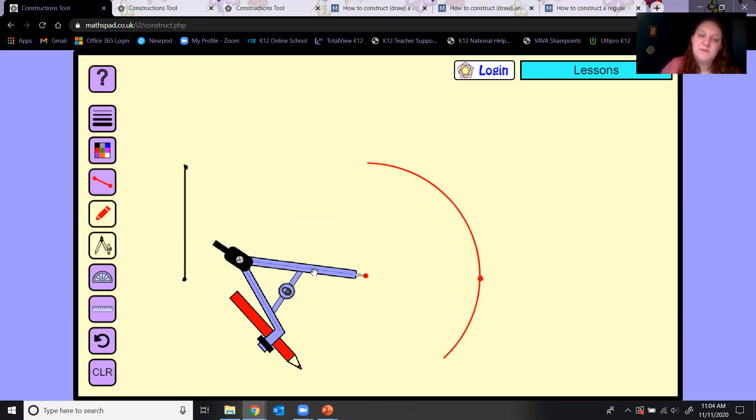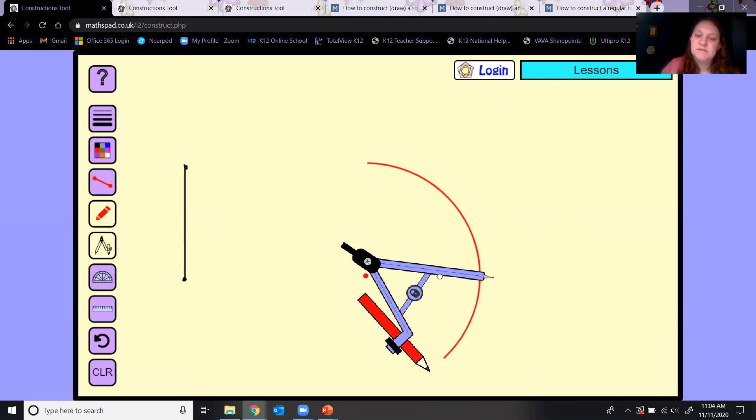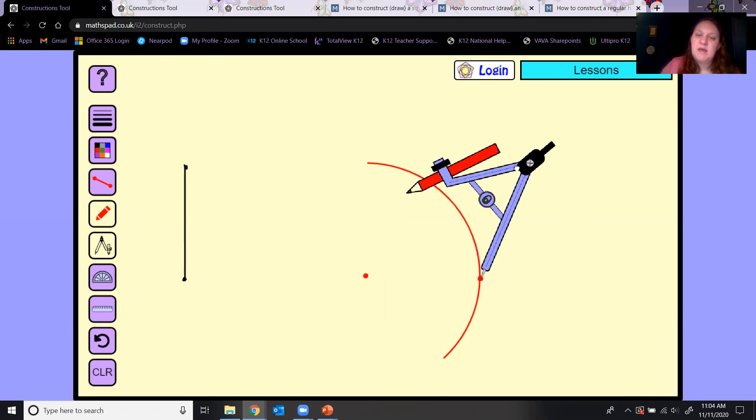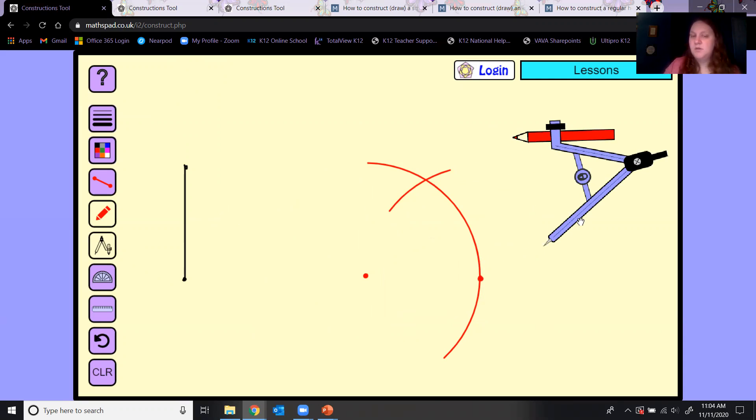Then take the point of your compass, put it on your new point, and make another intersection that intersects the first arc you made. Give that a point. Now with a straight edge, connect your three points and you will indeed have a triangle that has all equidistant sides. Remember an equilateral triangle has all congruent sides.